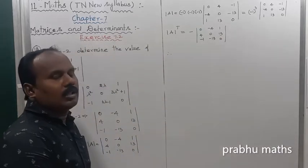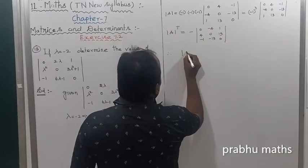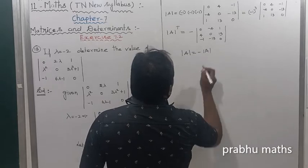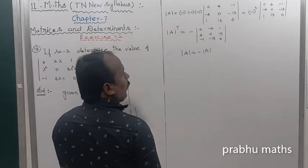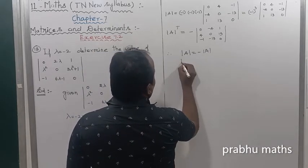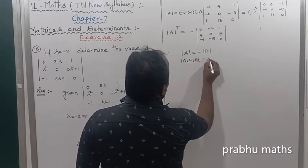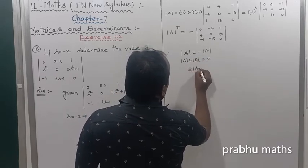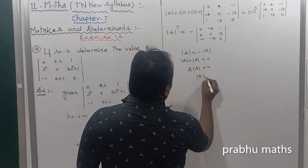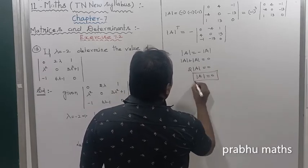The determinant of A is equal to minus determinant of A — that is the skew matrix property. So this one plus determinant of A is equal to 0, so 2 times the determinant of A is equal to 0, so the determinant of A is equal to 0. We get the solution.